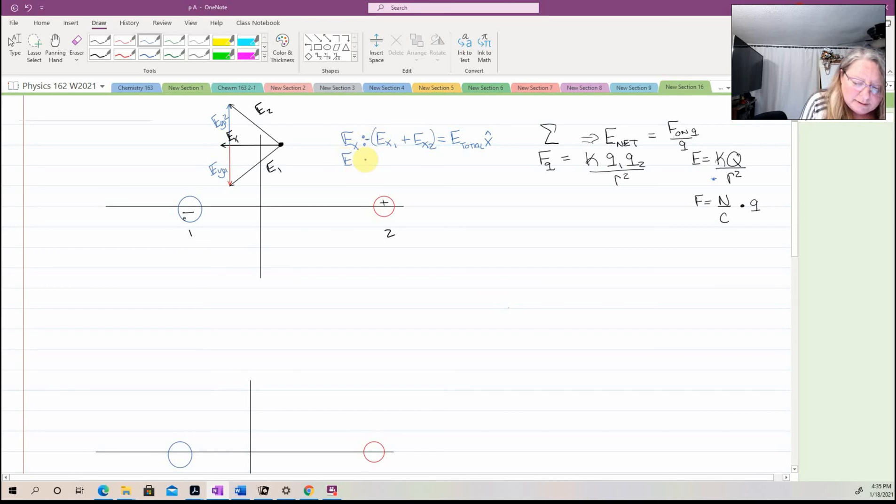My E in the Y, what do I have? I have E in the Y2 is going up, E in the Y2, E in the Y1 is going down. So minus E in the Y1 is going to equal my E total in the Y hat. My net electric field, the resultant of those two components. So my E net then, if I wanted to write that, is going to be my E total in the X, E total X hat plus E total Y hat. Then you put your signs in there.